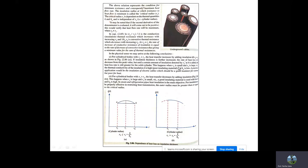This scenario occurs when r1 is small and rc is large — meaning the thermal conductivity of the insulation is very high, indicating a poor insulating material, and when h0 is low. A practical application would be insulating an electric cable, which is a good electrical insulator but a poor heat insulator.